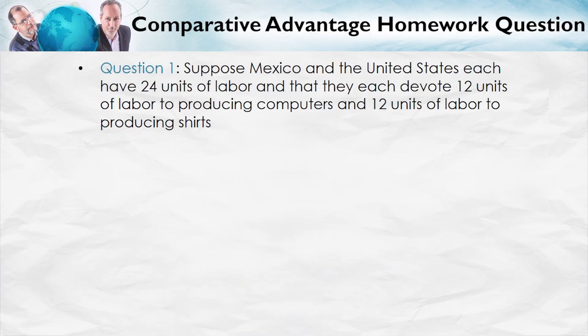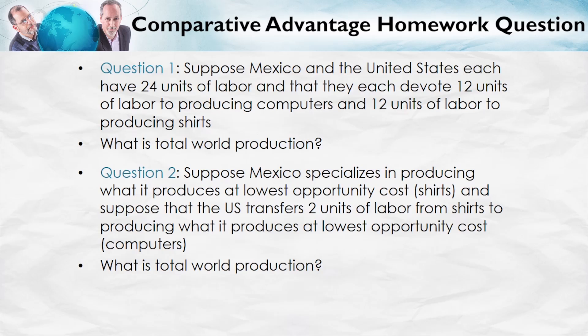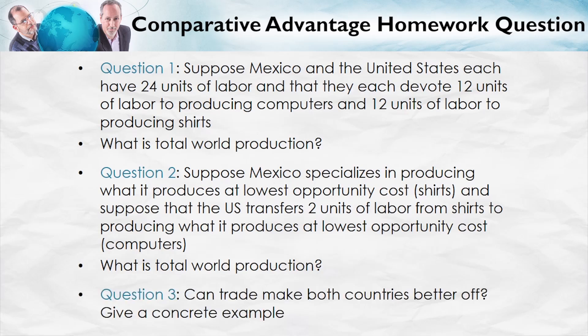Let's look in more detail. I'll leave some of the details to you in homework questions, which we'll go over in a future video. Question one: suppose Mexico and the United States each have 24 units of labor, and each devote 12 units to producing computers and 12 units to producing shirts. That's our baseline scenario. What is total world production? Question two: suppose Mexico specializes in what it produces at lowest opportunity cost — shirts — and the US transfers two units of labor from shirts to computers. What is total world production then? Finally, can trade make both countries better off, and give a concrete example of how many units must be traded.